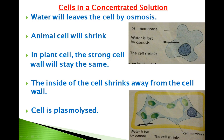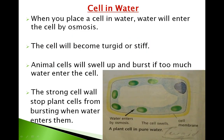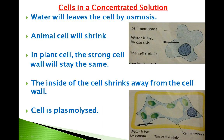In a plant cell, the strong cell wall will stay the same — the plant cell will not shrink in terms of the cell wall. Only the inner section, the cell membrane, will move inwards away from the cell wall, but the cell wall will remain stiff and rigid. The inside of the cell shrinks away from the cell wall, and this cell can be described as plasmolyzed.